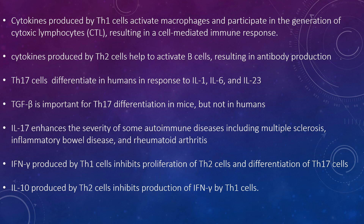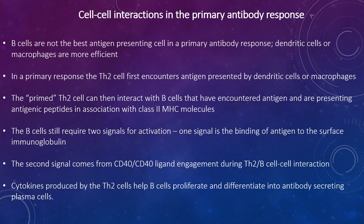The immune response is directed toward the type of response required to deal with the pathogen encountered: cell-mediated responses for intracellular pathogens, or antibody responses for extracellular pathogens. B cells are not the best antigen-presenting cell in a primary antibody response; dendritic cells and macrophages are more efficient. With some minor modifications, the hapten-carrier model of cell-to-cell interactions also applies to interactions in a primary antibody response.